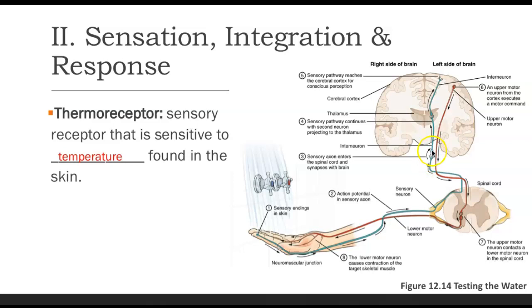In the brain, it's going to synapse with an interneuron to help convey that information, and eventually make its way toward a very important structure known as the thalamus. The thalamus is like a special sensory relay center. Any sensory information that comes in — whether it's pain, hot, cold, or pressure — is going to stop there and then be sent out the proper path. It will synapse with another neuron and go over to a sensory area in the cerebral cortex.